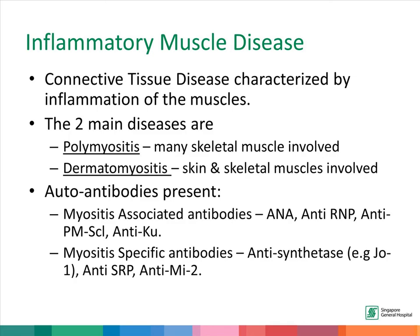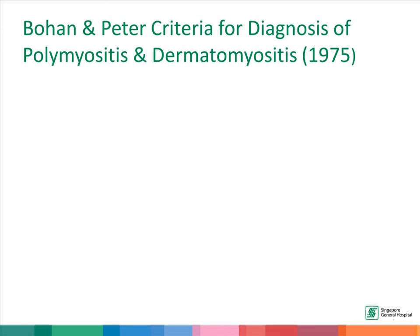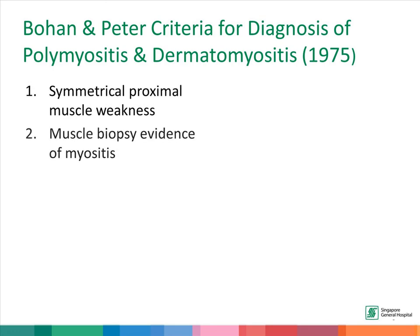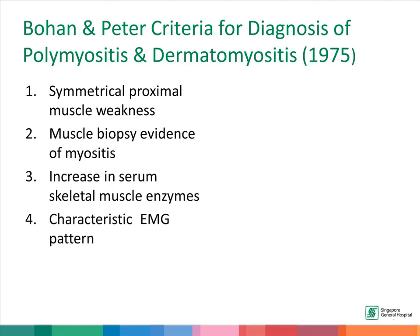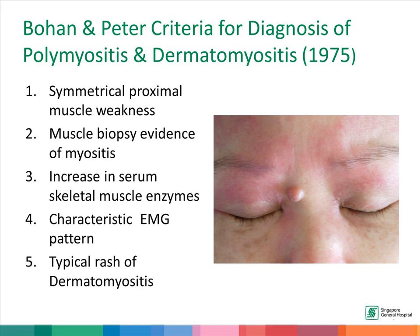The third condition is inflammatory muscle disease. As the name suggests, this condition is characterized by inflammation of the muscles. There are two main diseases under this category: firstly, polymyositis, when many muscles are involved, and secondly, dermatomyositis, where the skin as well as the skeletal muscles are involved. As this is an autoimmune disease, autoantibodies are also present — the myositis-associated antibodies as well as the myositis-specific antibodies. Patients can have symmetrical proximal muscle weakness, muscle biopsy showing evidence of myositis, increased skeletal muscle enzymes, a characteristic EMG pattern, and a typical rash of dermatomyositis.